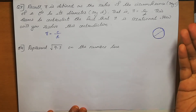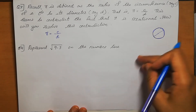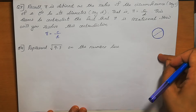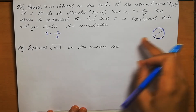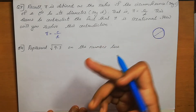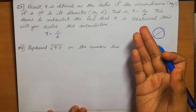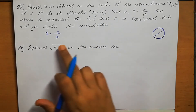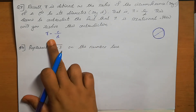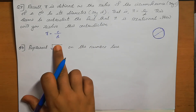Sometimes we get an irrational number — a non-terminating, non-recurring number — for the circumference. At that point π is an irrational number only. Otherwise we can say π equals C by D.